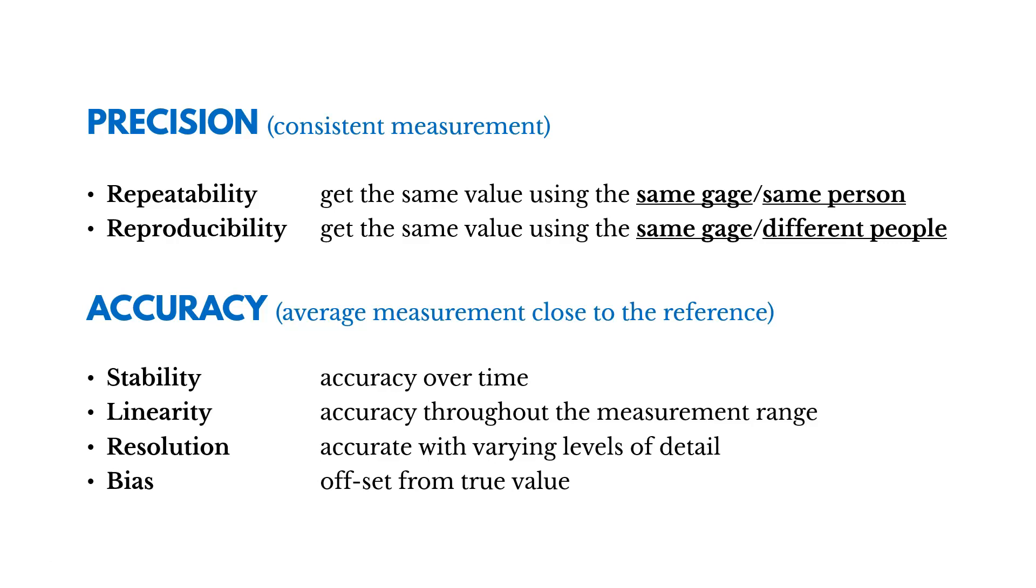Now, with accuracy, we seek for stability, getting accuracy over time. And then linearity, getting accuracy through the measurement range. So an example of this is we would hope that a thermometer, if we're measuring temperature, is accurate in both low and high temperatures, so across the range. Then resolution, we're seeking for accuracy with varying levels of detail. And then something we're trying to minimize here is bias, being offset from the true value. So an example would be that all measurements are off by 5% or 10%.